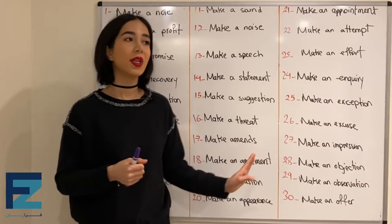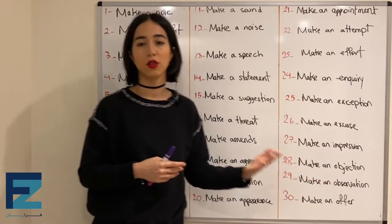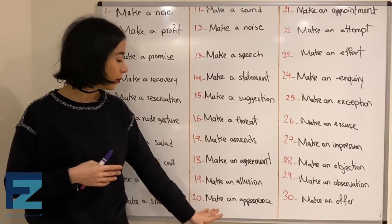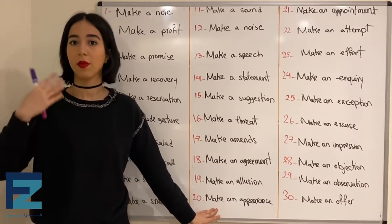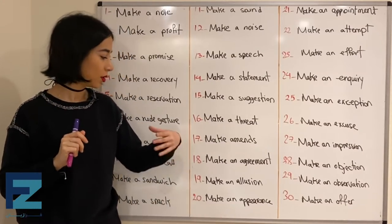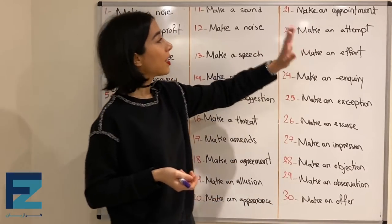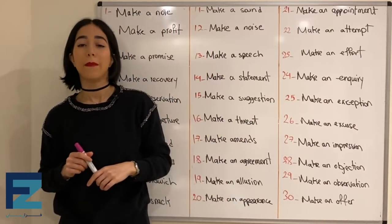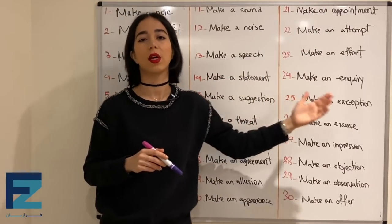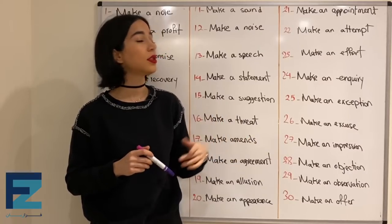Number twenty: make an appearance — means to show up in an event, تو یک مراسمی حضور پیدا کردن. Number twenty-one: make an appointment — means to set a time with someone to see them or do something, قراری گذاشتن برای دیدن یکی.